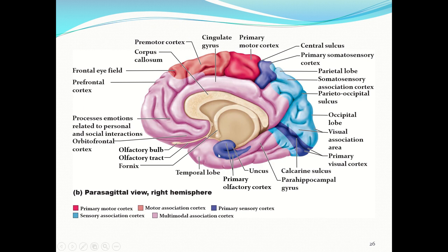Looking inward, the olfactory cortex is for smell, and notice it is right next to the limbic system — this is why smell is so closely associated with memory. One important fact about the thalamus is that all sensory information must pass through it first, except for smell. Olfactory molecules attach to receptors on the olfactory bulb and send information directly to the primary olfactory cortex without going through the thalamus, making it a very quick response with a direct emotional and memory link.